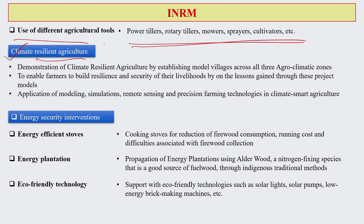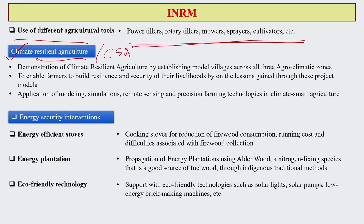Climate resilient agriculture, also known as climate smart agriculture, can be demonstrated by selecting model villages and training farmers in these practices. A significant amount of training by expert personnel is required. High-end technologies like modeling, simulation, remote sensing, and precision farming can be used for climate smart agriculture. The benefits of technology now need to reach farmers at the ground level — this is something that integrated natural resource management must ensure.